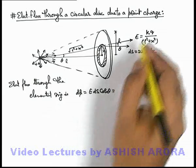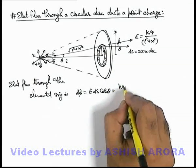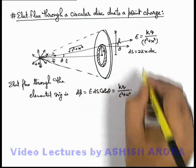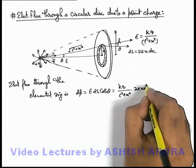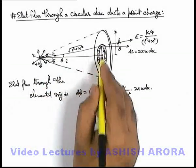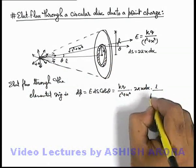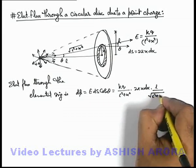If we substitute the values, electric field is kq by l square plus x square, ds is 2πx dx, and the value of cos θ we can substitute from this triangle as l by root of l square plus x square.